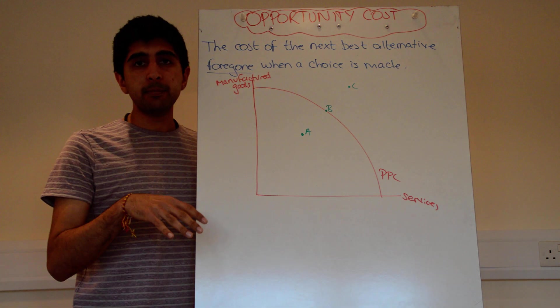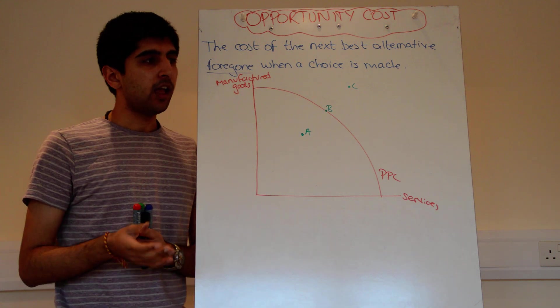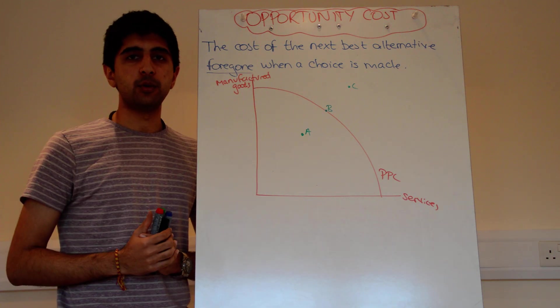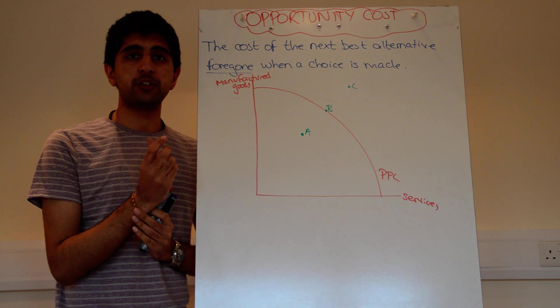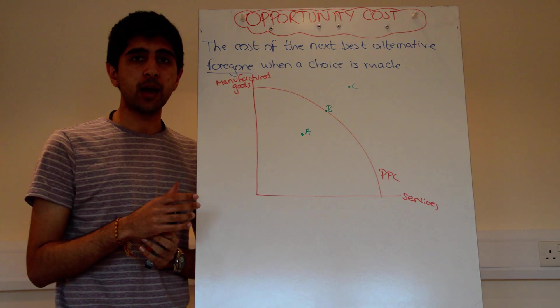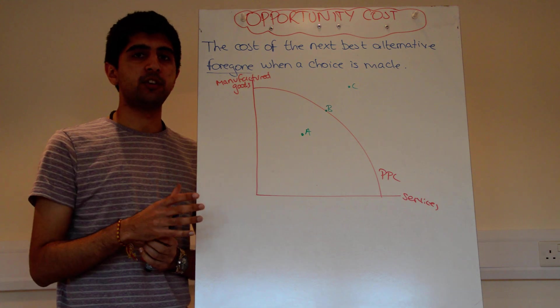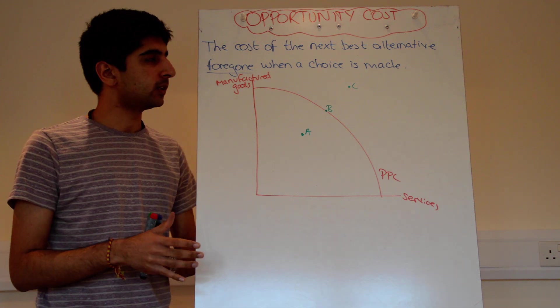For example, me making this choice to make this video — I could have been watching TV in my living room. That was my next best alternative that I'd given up. Therefore, that's the opportunity cost of me making this video.